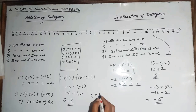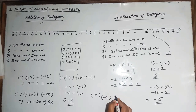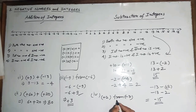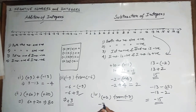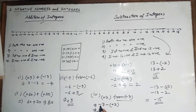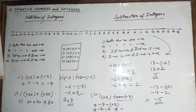Another example: subtract plus 2 from minus 7. Write minus 7 minus plus 2. Plus into minus gives minus 2, so we get minus 7 minus 2. Both are negative, so we add the absolute values: 7 plus 2 equals 9, and the sign is negative, giving minus 9. This is how we add and subtract integers. Thank you.